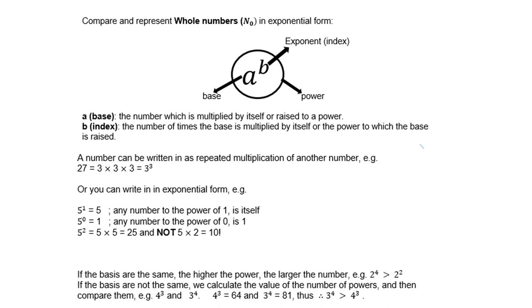You can also write numbers in exponential form. For instance, 5 to the power of 1 is 5 — that is, any number to the power of 1 is itself. 5 to the power of 0 is 1; any number to the power of 0 is 1. And 5 to the power of 2 is 5 times 5, which is 25 — it is not 5 times 2, which is 10.